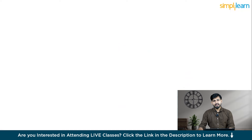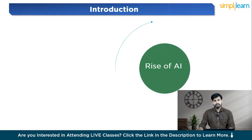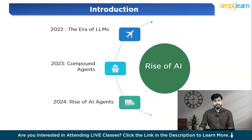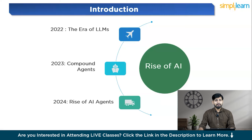Let us discuss the evolution of AI. In 2022, there was an era of large language models. These models, like GPT-3, became very popular — they could write emails, generate code, and answer questions, but were limited to specific tasks without broader integration. In 2023, there was the introduction of compound agents, which combined multiple AI models to handle very complex tasks. They could perform several actions based on data and context provided, making them more useful than single-purpose models.